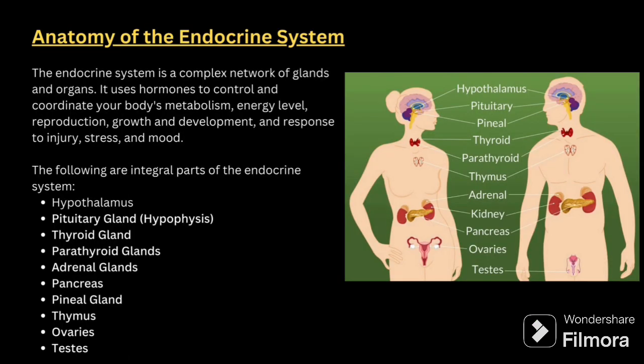Starting with anatomy of the endocrine system. The endocrine system is a complex network of glands and organs. It uses hormones to control and coordinate the body's metabolism, energy level, reproduction, growth and development, and responses to injury, stress and mood. The following are the integral parts of the endocrine system.